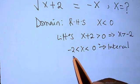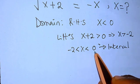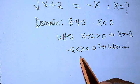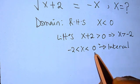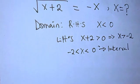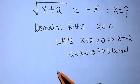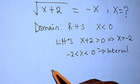So we are going to have x greater than minus 2 and x less than zero. This is the interval for the solution. We are going to have a solution between minus 2 and 0, where neither minus 2 nor 0 is included in the solution.